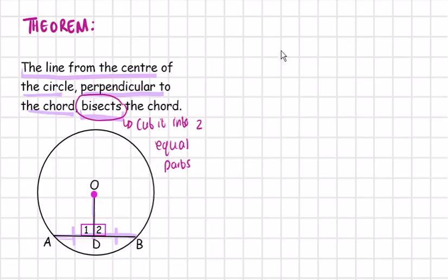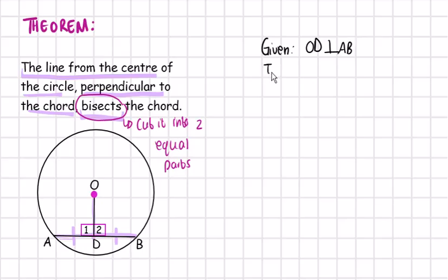So let's write down what we have been given and what we have to prove. We have already been given that OD is perpendicular to AB. What we are required to prove is that OD bisects AB, meaning that AD is equal to DB.